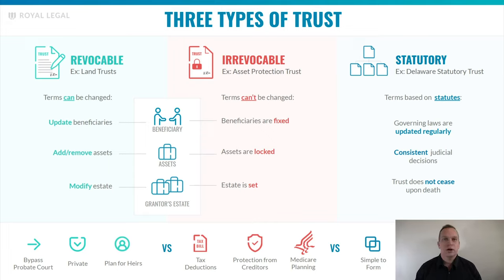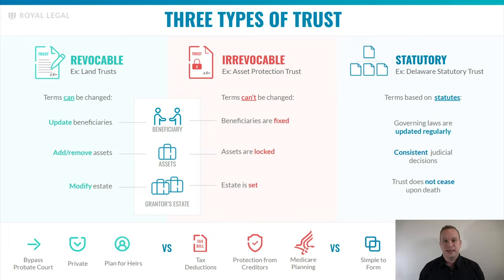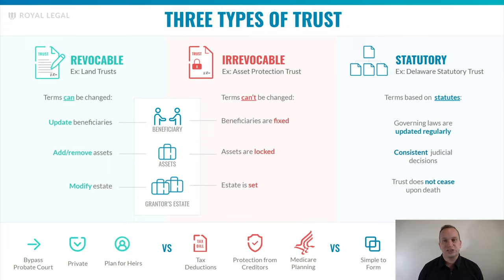Your revocable trusts are a type of trust that you, as the creator of a trust, can just tear up at any time, and then all of the assets just flow back to you as the creator of the trust. An irrevocable trust is a trust that, once it's created, you can't terminate that trust. You can't change anything about it — it's locked in place. Statutorily created trusts are created by state statute, and those have particular requirements that you actually have to look at the state statutes to figure out exactly how they work.